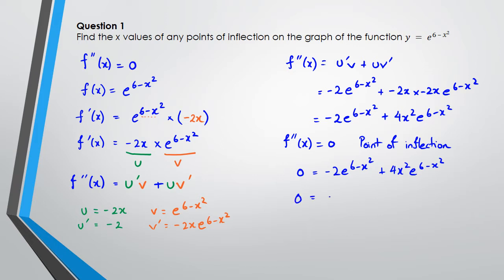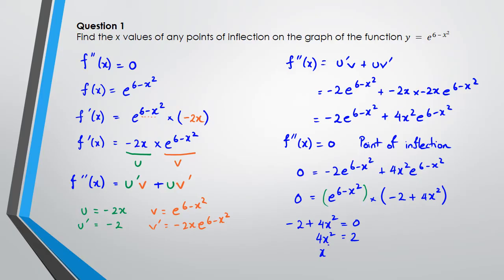Since e to the power of 6 minus x squared is a common factor, this can be written as e to the power of 6 minus x squared times the quantity negative 2 plus 4x squared equals 0. Now, e to the power of 6 minus x squared can never equal zero, so we need negative 2 plus 4x squared equals 0. This gives 4x squared equals 2, x squared equals one half, and therefore x equals plus or minus the square root of one half. Those are the two points of inflection.